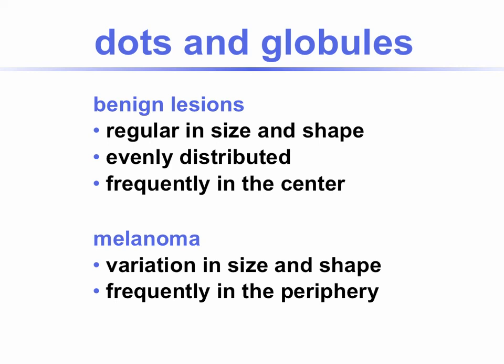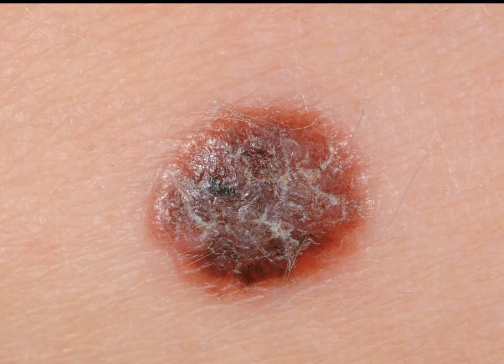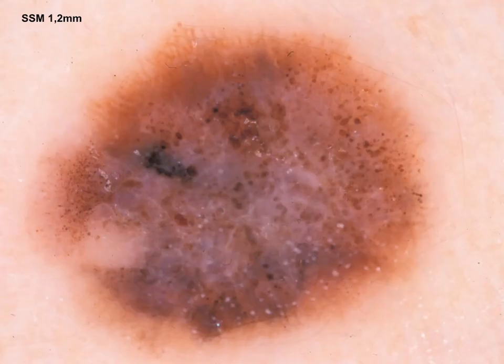Dots and globules have been taken as one criterion by many authors. What they emphasize is not whether it's a dot or a globule, but how they appear. In benign lesions, they are rather regular in size and shape, evenly distributed, and frequently found in the center. In melanoma, they vary in size and shape and are frequently found at the periphery. Here is a melanoma case clinically and dermoscopically — you see multiple irregular dots and globules throughout the lesion, very irregular in size and distribution, both on the right and left sides.